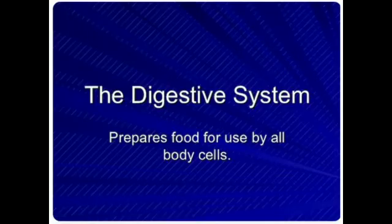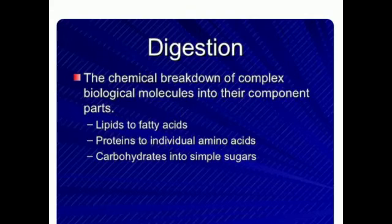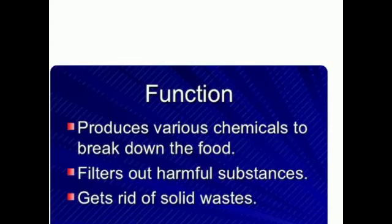The digestive system prepares food for use by all body cells. Digestion is the chemical breakdown of complex biological molecules into their component parts — like lipids to fatty acids, proteins to individual amino acids, and carbohydrates into simple sugars.